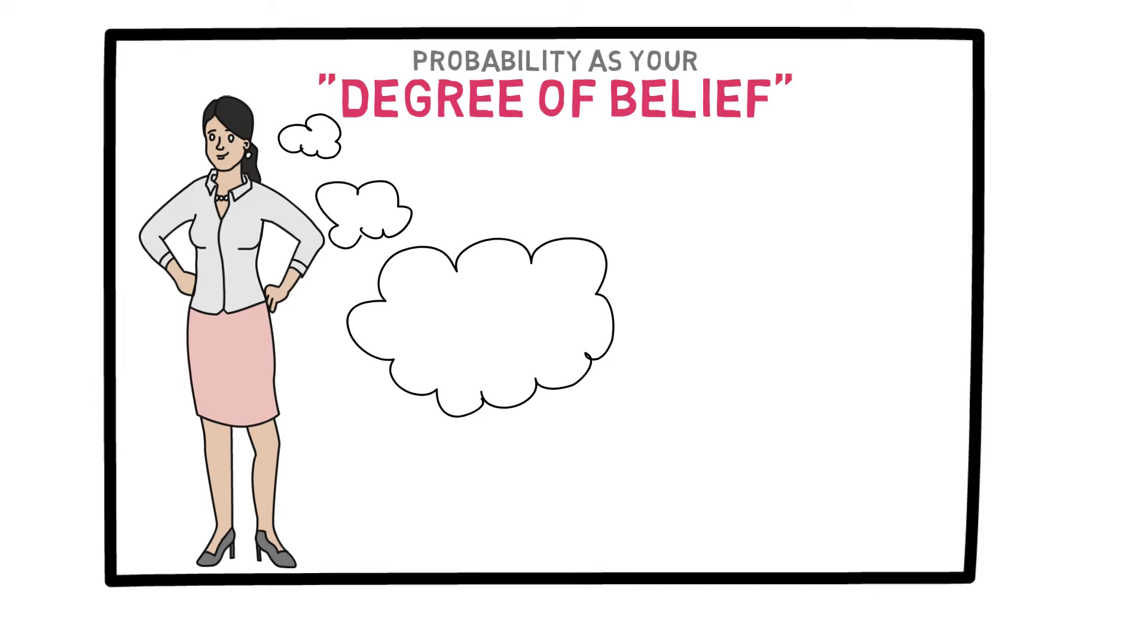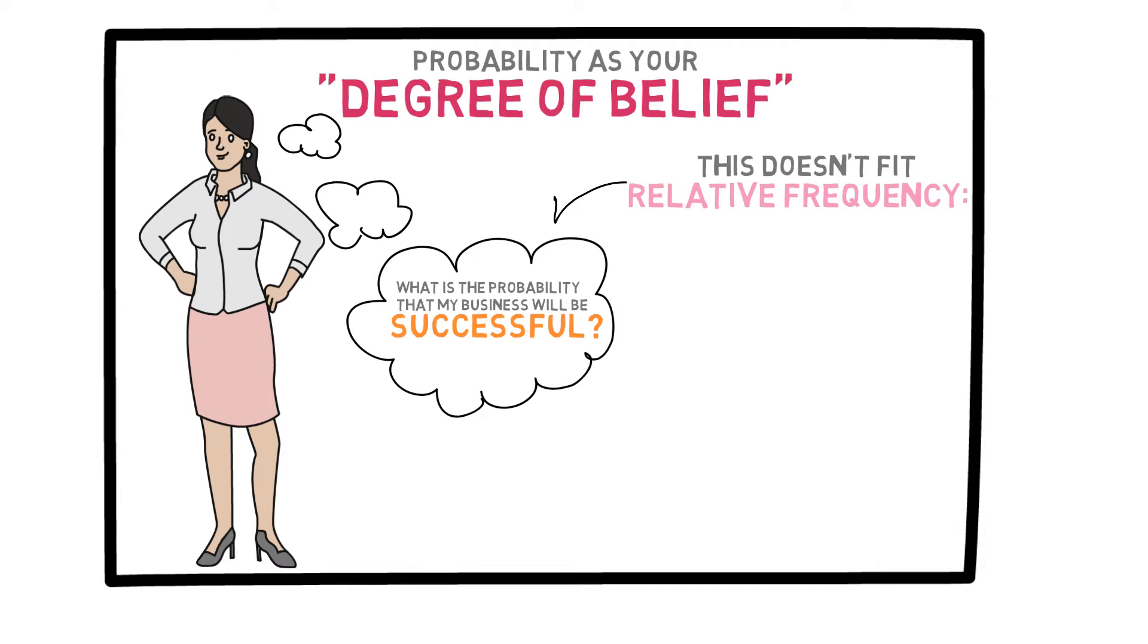Suppose you want to start a business and you are interested in knowing the probability that your business is successful, supposing we have a precise definition for success. So what kind of probability can be assigned here? This doesn't seem to fit any of the interpretations of probability that we have discussed so far. It doesn't fit relative frequency, which is repeating an experiment many times in order to obtain an accurate probability. You could not start 1,000 businesses in the same way you could flip a coin a thousand times and observe the results.